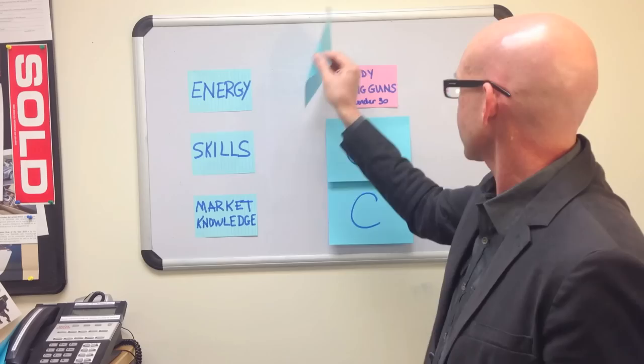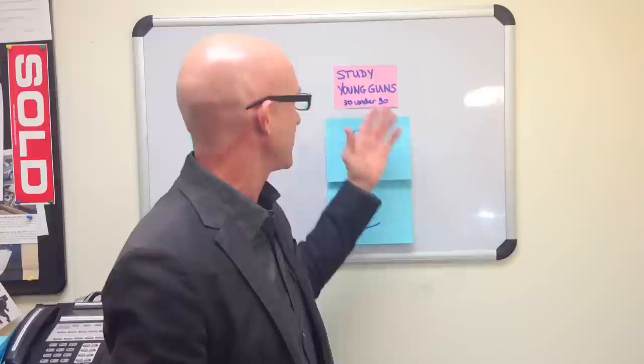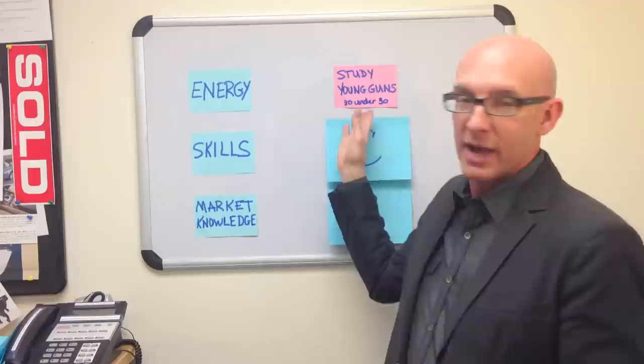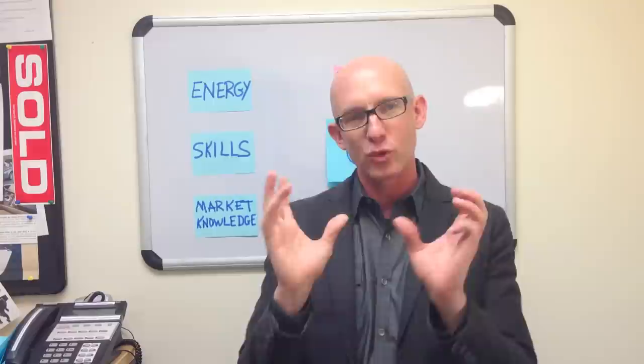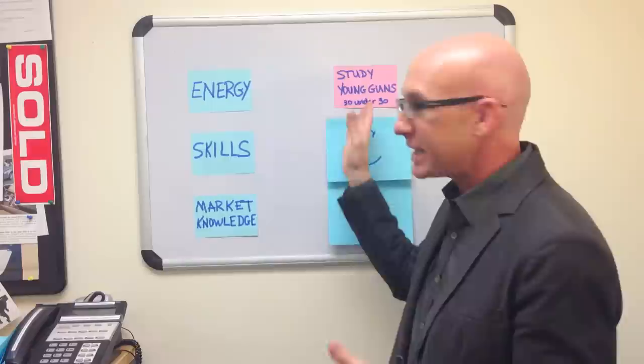The fourth strategy is study success. Study other people who've been successful as very young or new agents. Study the young guns. Who are the top producers in your market or anywhere that have been very successful even at a very young age? Realtor Magazine every year does a survey of the top 30 agents under the age of 30. They call it 30 under 30.